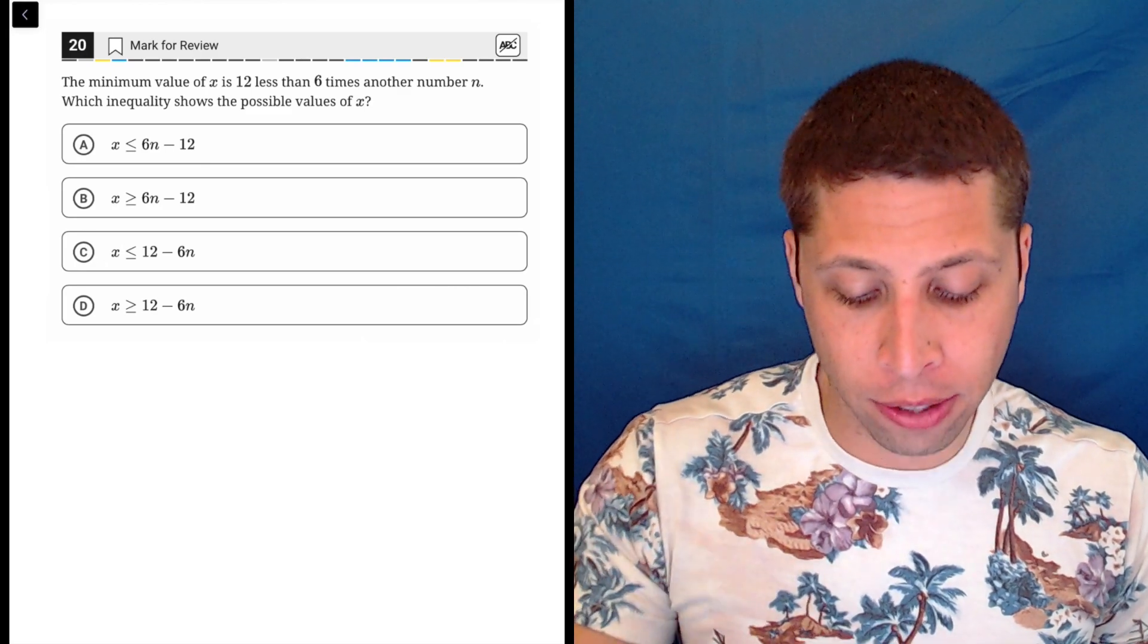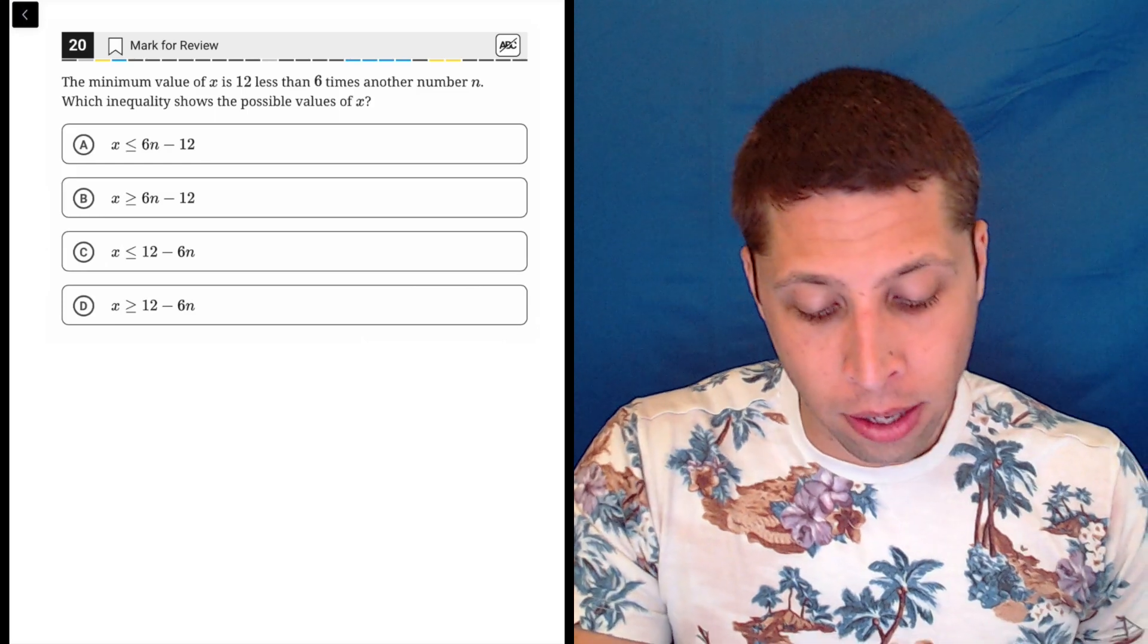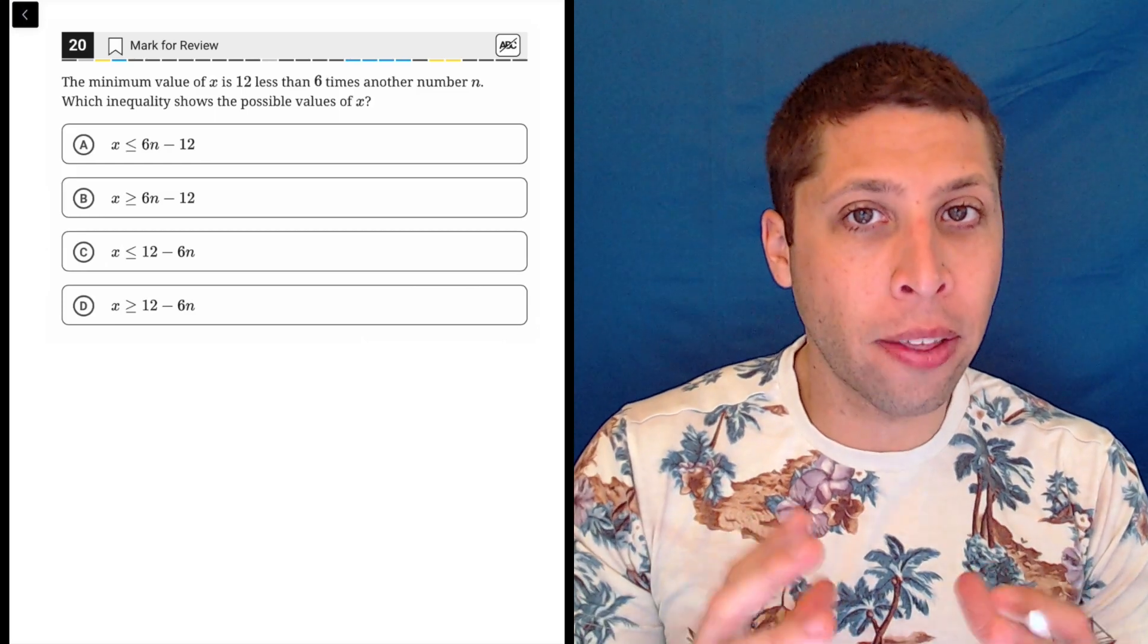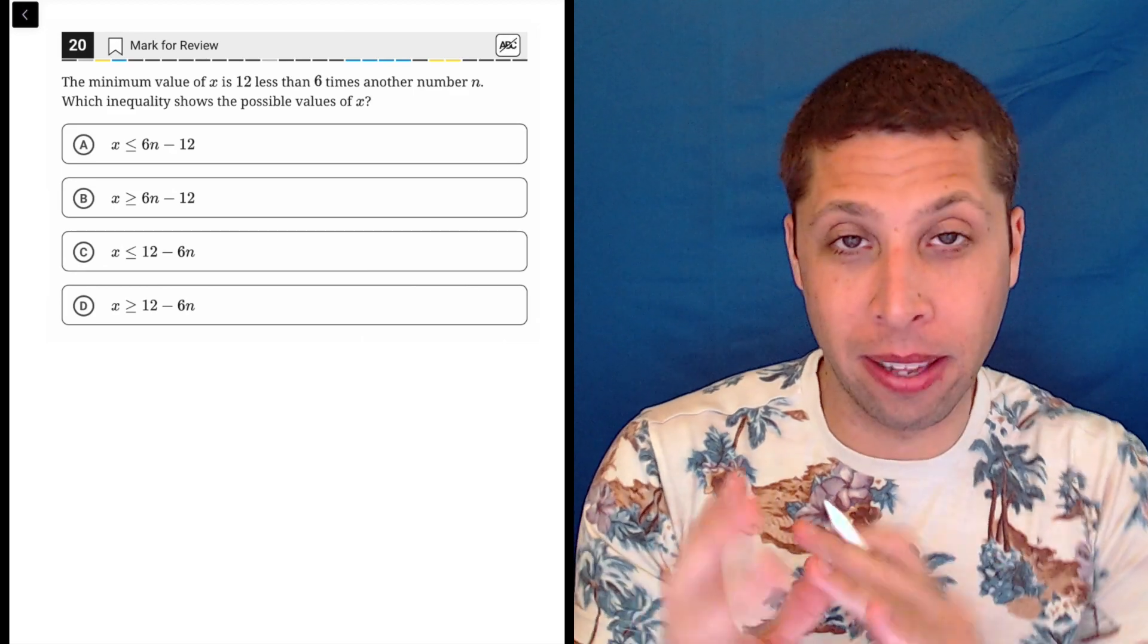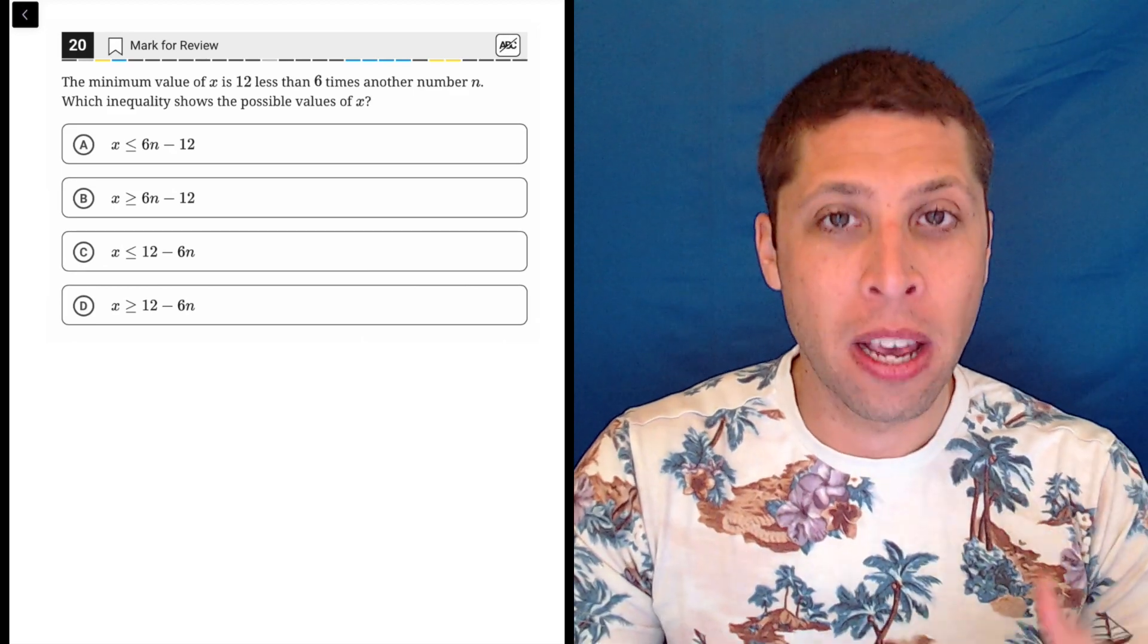So the minimum value of x is 12 less than 6 times another number n. Try to piece it together by starting with the n. We can tell from the answer choices that n is part of this equation somehow. So let's work it back.